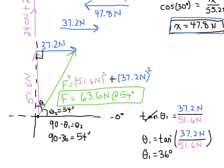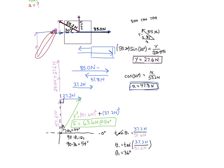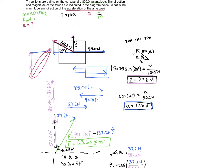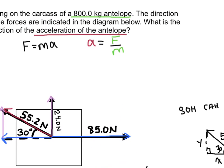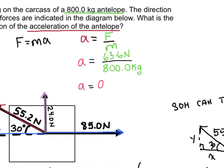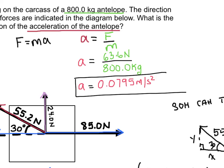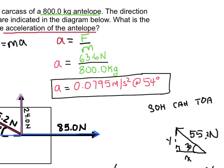So my net force is 63.6 newtons at 54 degrees above the horizontal. Now I take that net force and plug it back into the acceleration equation: acceleration equals force divided by mass. The angle comes along for the ride since acceleration is always in the same direction as the net force. The acceleration of the antelope is 0.0795 meters per second squared at 54 degrees from the horizontal.